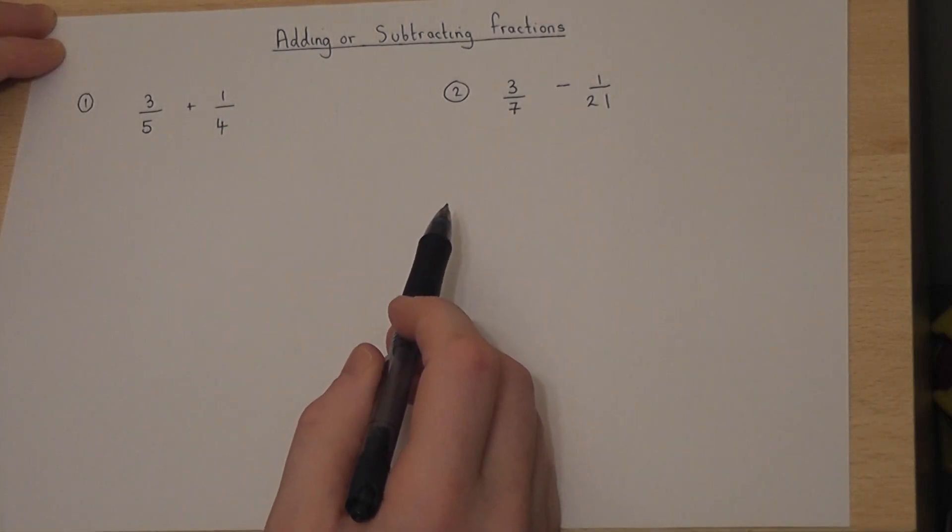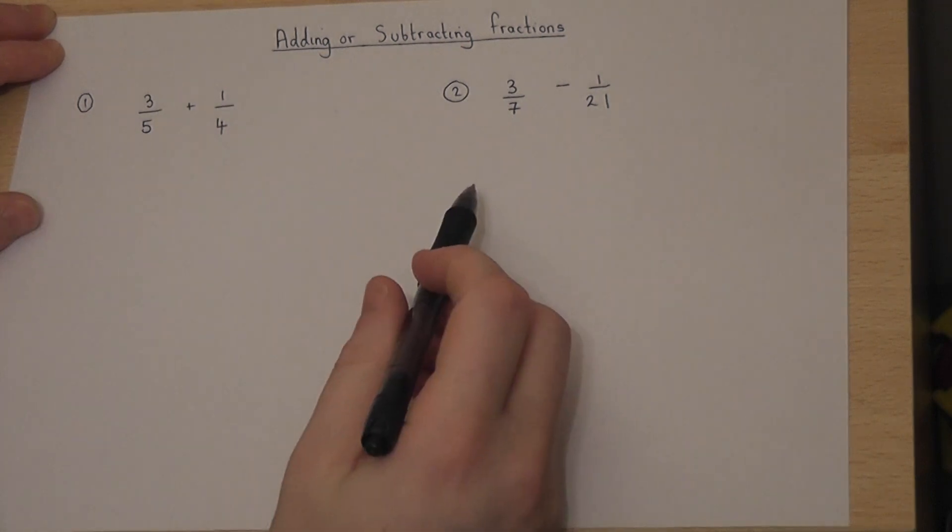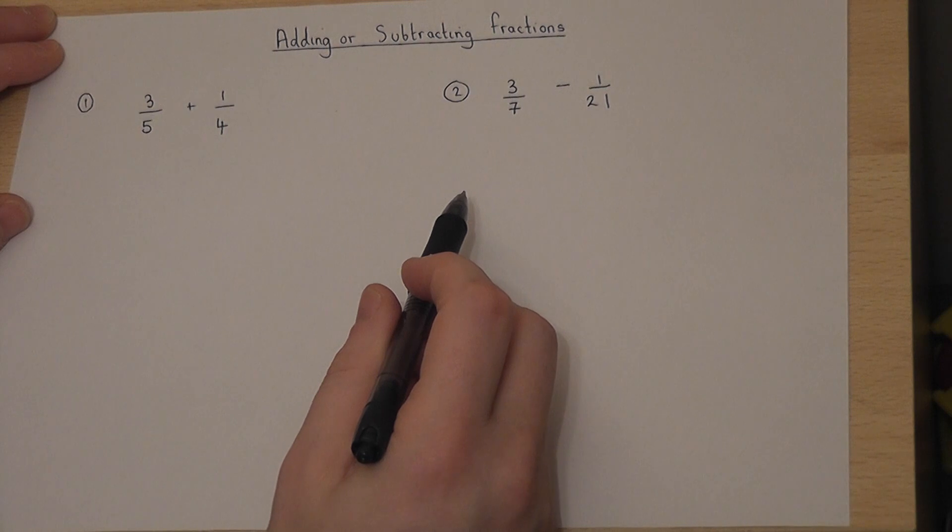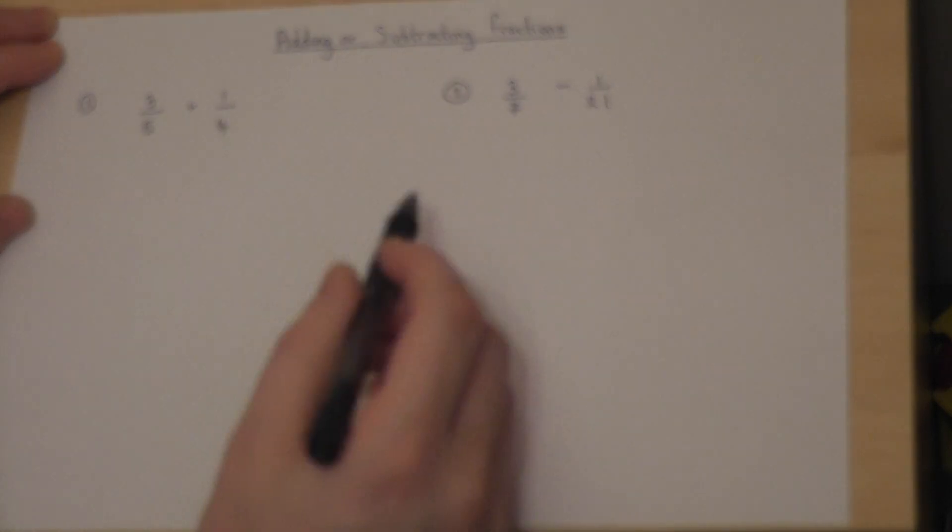When we add or subtract fractions, we need the bottoms of the fractions to be the same. The method to find this is to find the lowest common multiple of the bottom numbers.